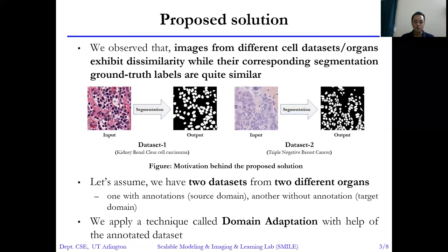In this paper, we propose a self-segmentation network utilizing domain adaptation technique with the help of an automated dataset. At first, we propose an unsupervised domain adaptation network, then we extend it to semi-supervised domain adaptation.